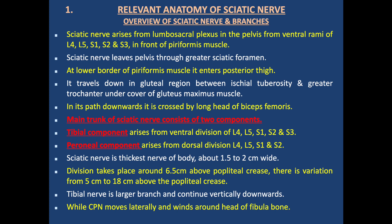The sciatic nerve leaves the pelvis through the greater sciatic foramen, at the lower border of the piriformis muscle, and enters the posterior thigh. It travels down in the gluteal region between the ischial tuberosity and greater trochanter, under the cover of the gluteus maximus muscle. In its path downward, it is crossed by the long head of the biceps femoris muscle.